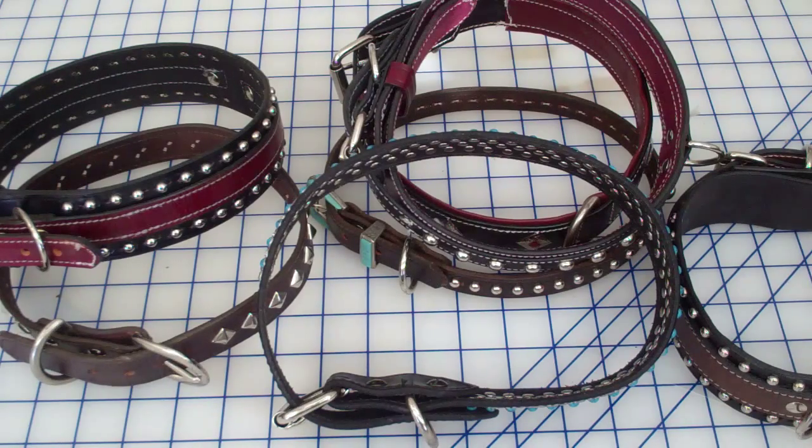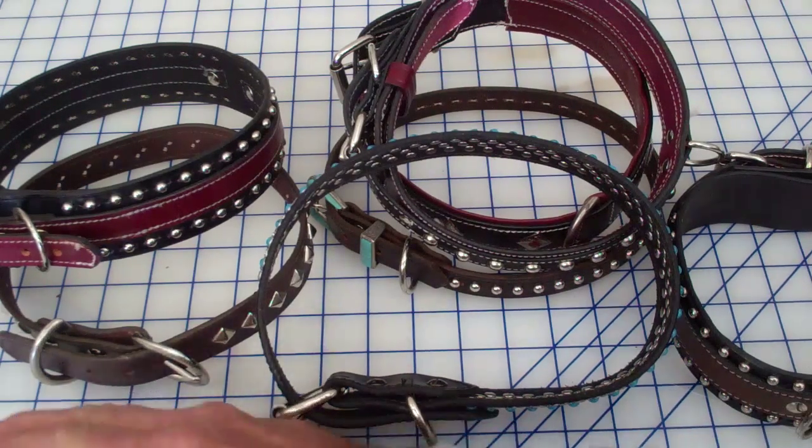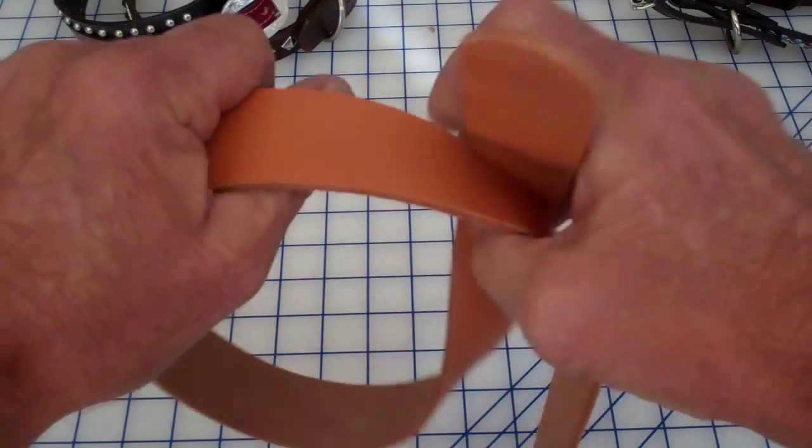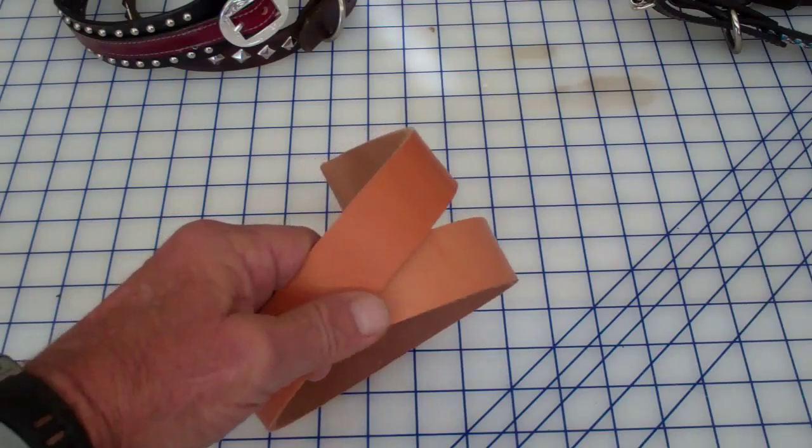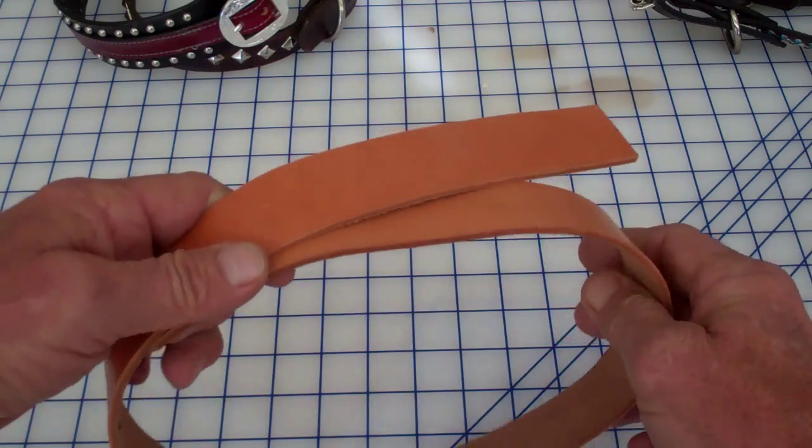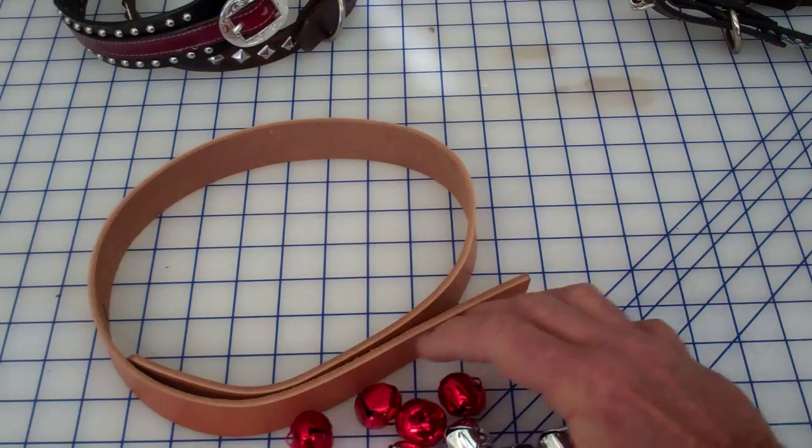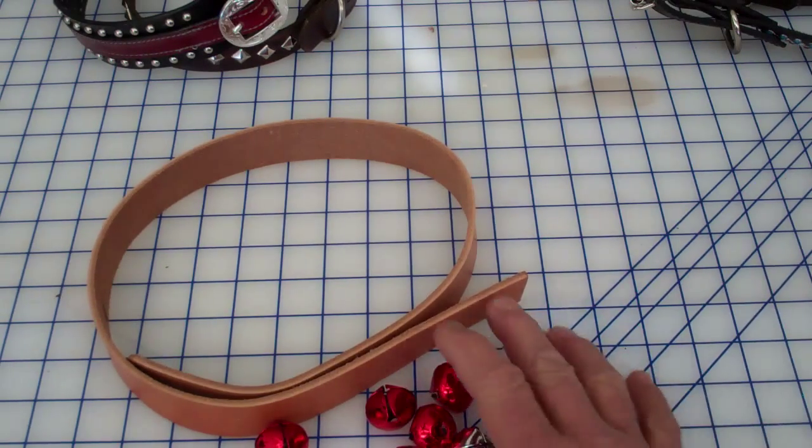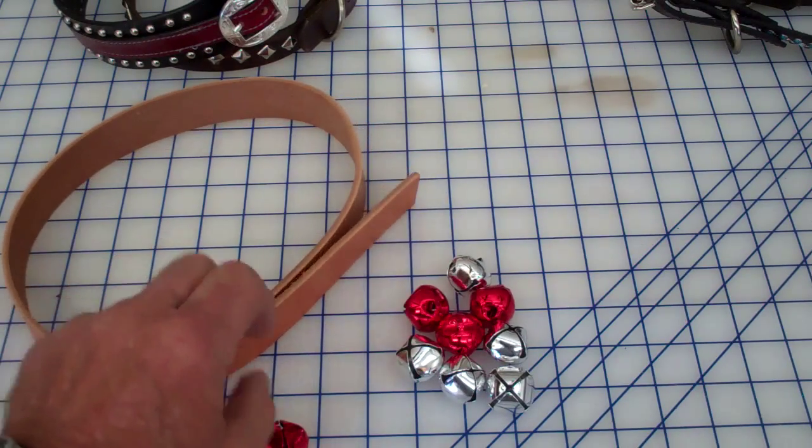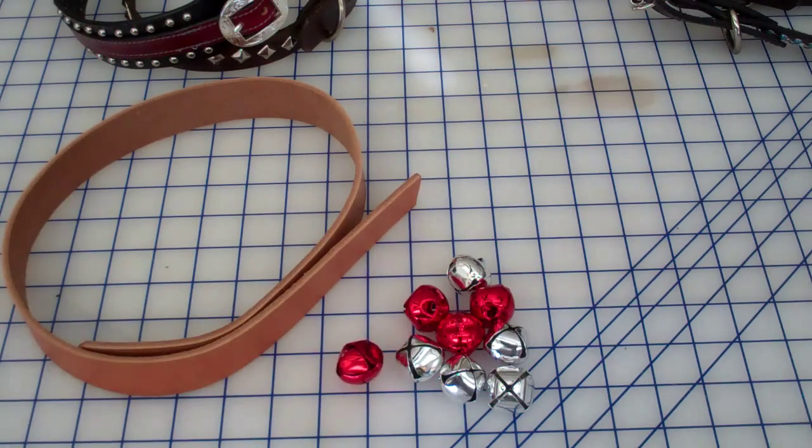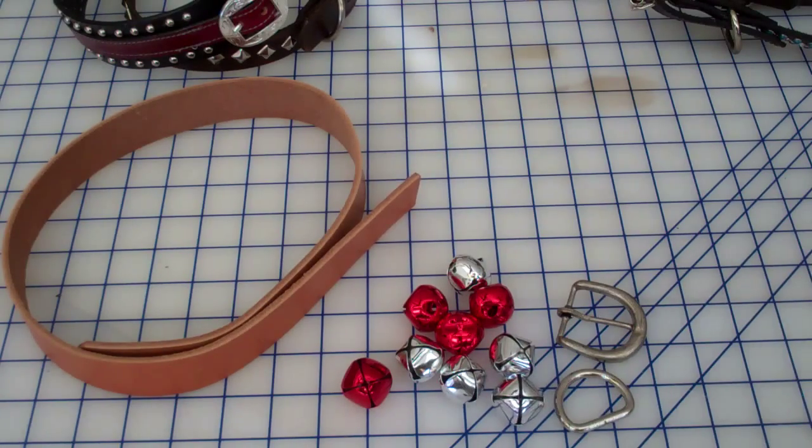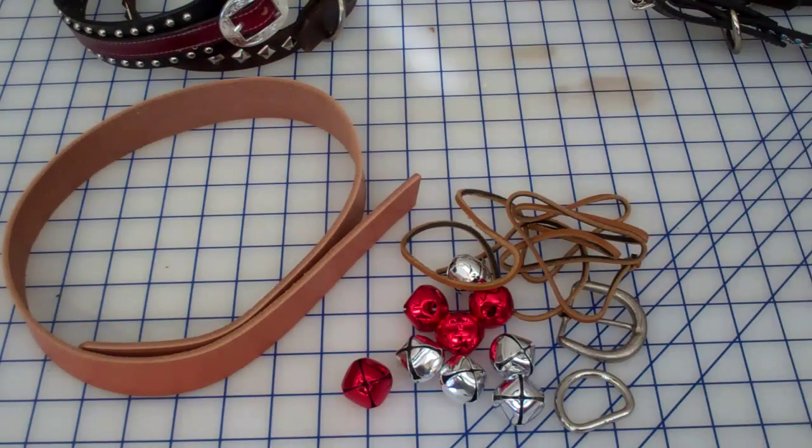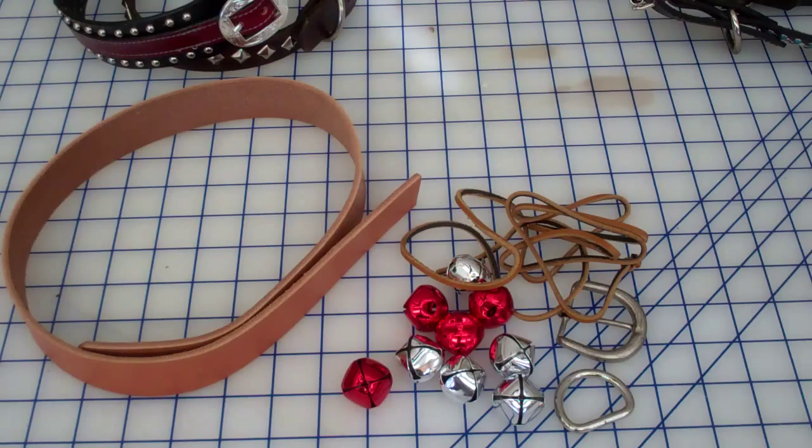I'm going to show you the parts I'm going to need. Cut yourself a strap of leather measured out to what you believe to be the length for your dog. You're going to need some jingle bells that you can buy at craft stores. We're going to need a belt buckle, a d-ring, and leather shoelaces.